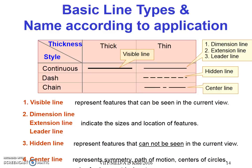To draw any engineering drawing, it is necessary to understand the basic line types and their names. The visible line, which is continuous, is used to show the feature or outline of any object. A comparatively thin line is used to represent dimension, extension, or leader lines. Hidden lines are used to represent features of an object not visible in the front, top, or side view. For symmetrical objects like a cylinder, circular hole, or sphere, a center line is required in the drawing.